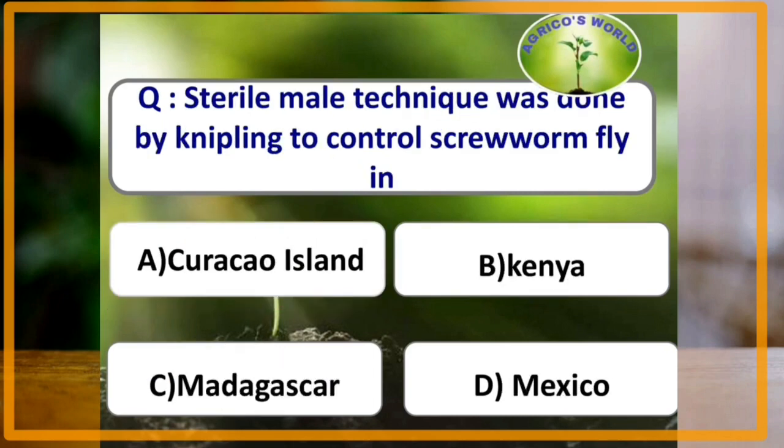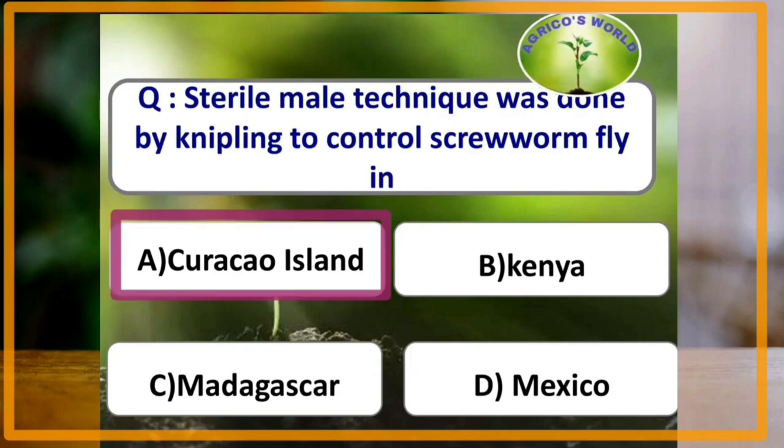Sterile male technique was done by the scientist Knipling to control screw worm fly in Curacao Island.